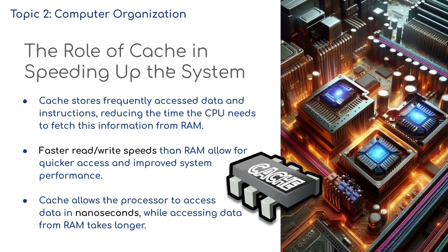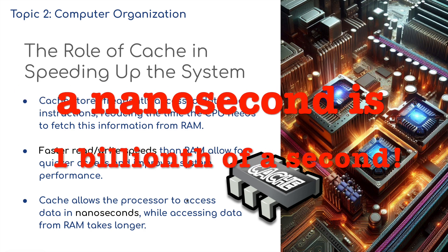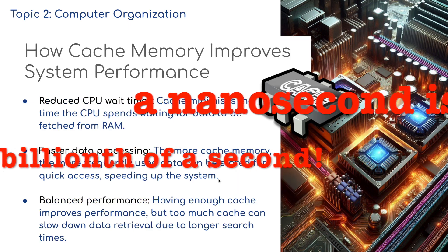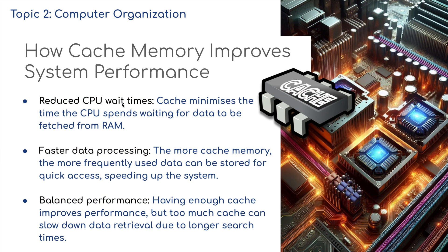In terms of speeding up the system, cache stores frequently accessed data and instructions, reducing the time the CPU needs to fetch this information from RAM. It has faster read and write speeds than RAM, allowing for quicker access and improved system performance. Cache allows the processor to access data in nanoseconds, while accessing data from RAM takes longer.